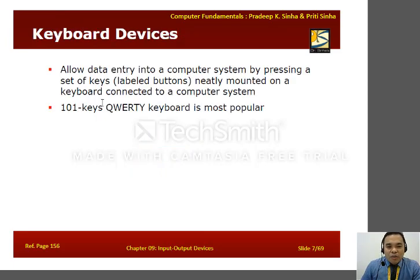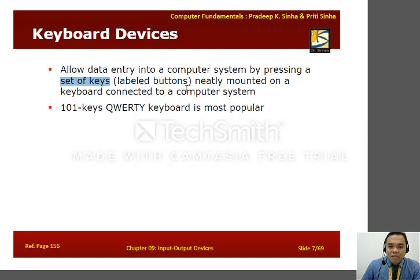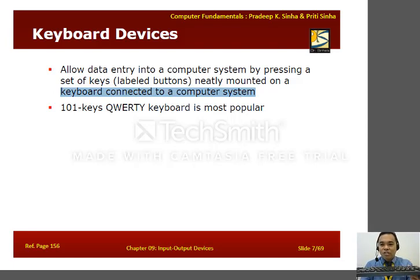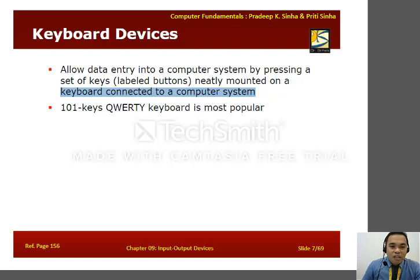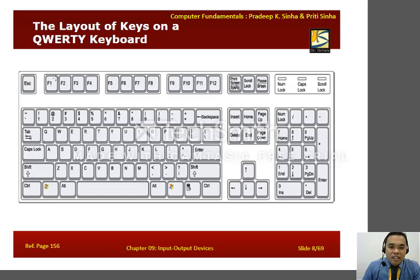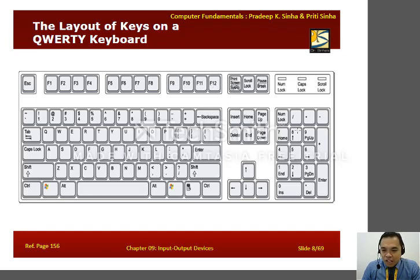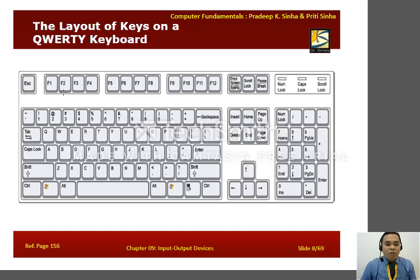Let's move to keyboard devices. A keyboard is a device with a set of keys — labeled buttons — mounted and connected to a computer system. In front of me is an example of the QWERTY keyboard, which is the most popular keyboard device with 101 keys. The layout includes an escape button on top, function keys F1 through F12, number keys, and a numeric keypad on the right part of the keyboard.